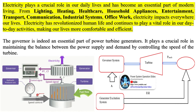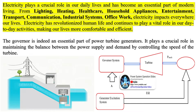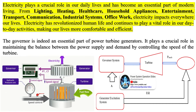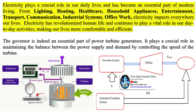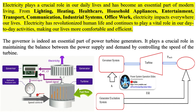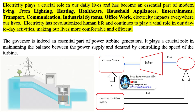Electricity has revolutionized human life and continues to play a vital role in our day-to-day activities, making our lives more comfortable and efficient. The governor is indeed an essential part of power turbine generators. It plays a crucial role in maintaining the balance between power supply and demand by controlling the speed of the turbine.